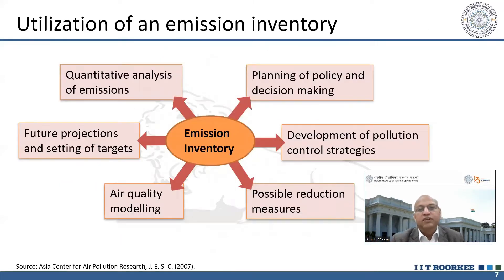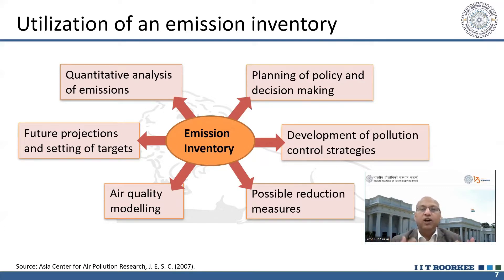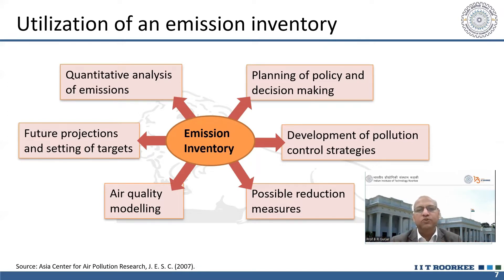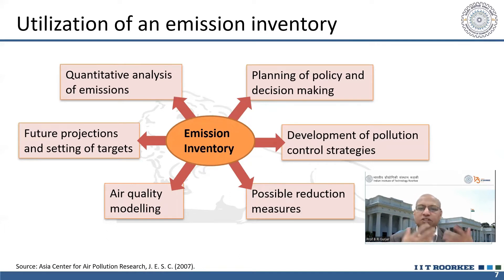Utilization of emission inventory is several-fold. For planning policy and decision-making, for example in Delhi, CNG was implemented — we can estimate how much particulate matter reduction resulted from changing the fuel. Similarly, any technological interventions can be linked. For development of pollution control strategies — like shifting from private vehicles to public transport, or adopting new technologies — emission inventory shows whether interventions are effective or not. It also supports air quality modeling and possible reduction measures.